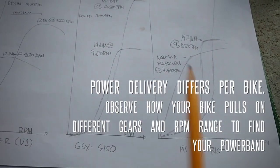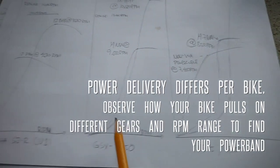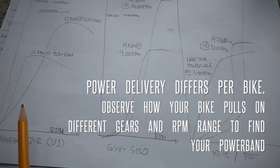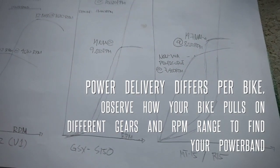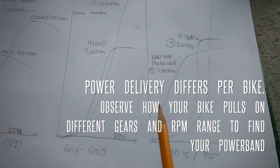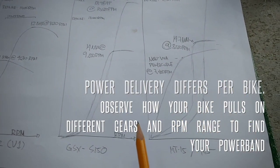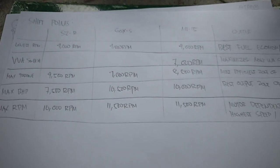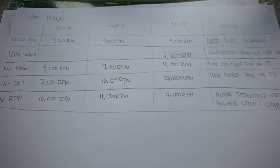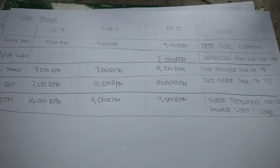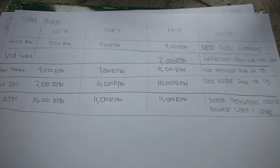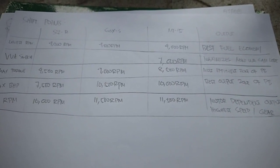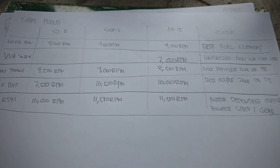Although, pagdating sa higher RPM range, mas masigla si GSX kumpara kay SZ. And pwedeng tablahin ni GSX si MT-15 pagdating ng upper RPM range. So ngayon, familiarized na sa atin yung mga power curve ng iba't ibang klase ng motor, whether low revving, high revving, or VVA. So kailan naman yung pinaka-optimum na moment para mag-cambio tayo?